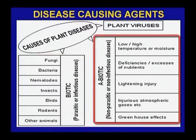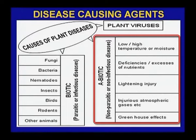Under abiotic or non-parasitic, non-infectious diseases: low and high temperature or moisture, deficiency diseases and excess of nutrients, lightning injury, injurious atmospheric gases, and greenhouse effects — which are now coming as climate change — are witnessing diseases in plants.